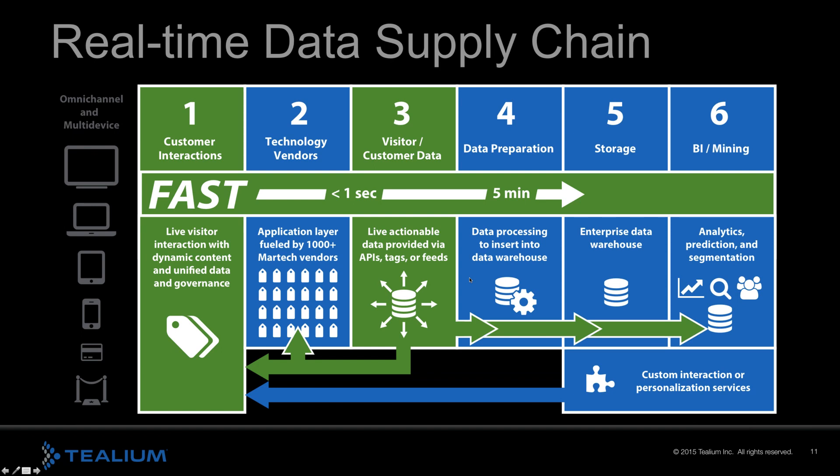If we modernize the data supply chain into a real-time data supply chain, rather than doing all the segmentation and processing on the back end, we do it on the front end. That's one of the neat things a customer data platform brings to the table — the ability to do all of that correlation, segmentation, and enrichment at the point of data collection, not after the fact. By doing that, you speed up the real-time data supply chain and enable a real-time capability to learn and act on customers.